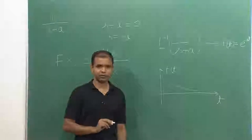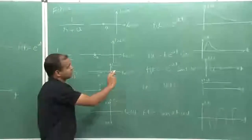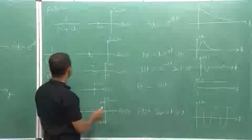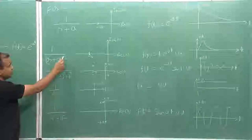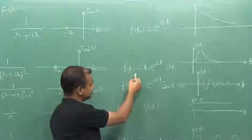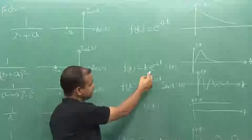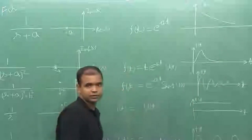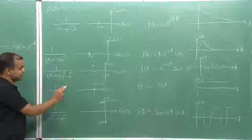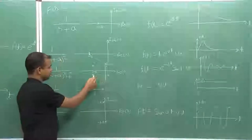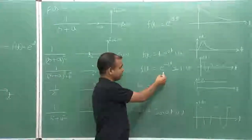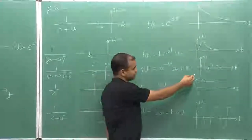Let us see more examples. If my pole is at -a, in the time domain f(t) will be e to the power minus at and the response will decay. If my transfer function is 1 by (s + a)², I will have two poles at s = -a and its inverse Laplace gives f(t) = t·e^(-at), and the system is stable. If my system is 1 by [(s+a)² + b²], I have two complex conjugate poles in the left half, and the time domain equation will be e^(-at)·sin(bt), giving a decaying sinusoidal response.